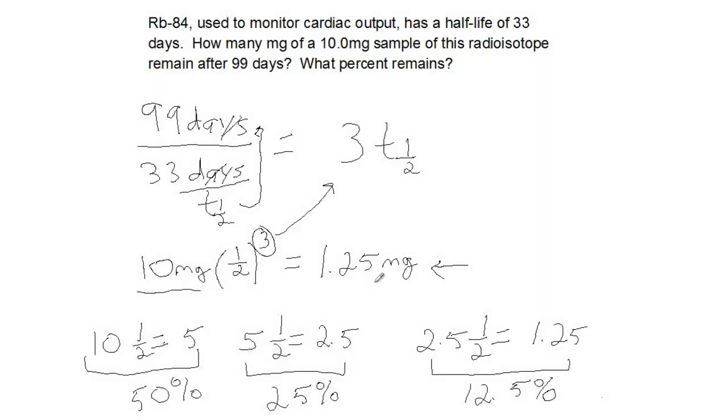Now, to determine the percent, we just do part over whole. In this case, the part that remains over what we started with. So this would be 1.25 divided by 10 times 100 percent, which equals 12.5 percent.